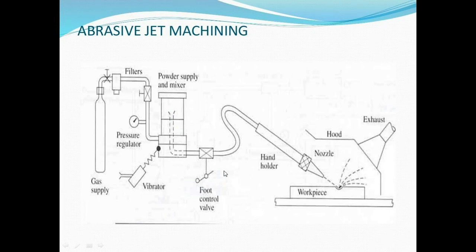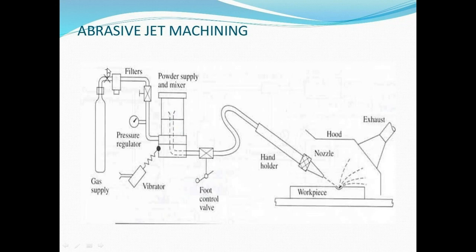This is the basic schematic diagram of abrasive jet machining. The components include: gas supply tank, filters, powder supply and mixer, vibrator, pressure regulator, flow control valve, hand holder, nozzle, hood, exhaust, and workpiece. Generally, nitrogen, carbon dioxide, or compressed air is used. The abrasive particles used are: aluminum oxide, silicon carbide, glass powder, dolomite, and specially prepared sodium bicarbonate.